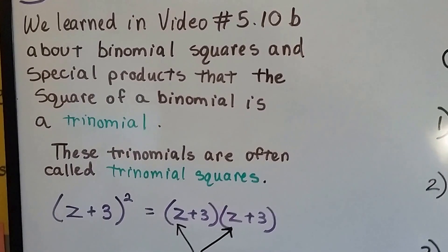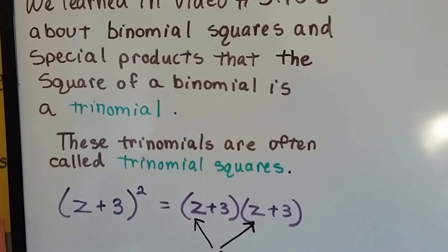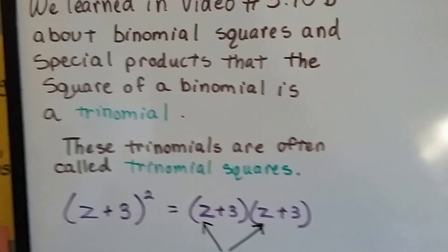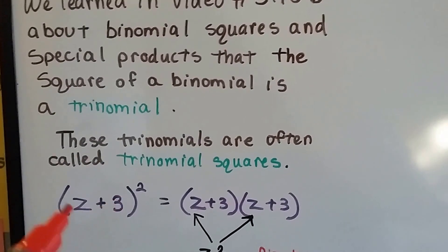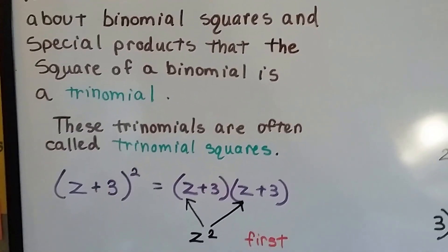So let me show you. Here's a binomial square, z plus 3 squared. It's a binomial because it's got two terms, and it's squared because it's got the little two.